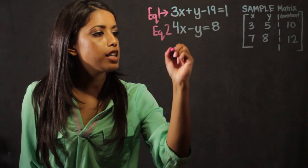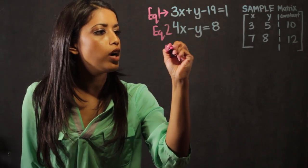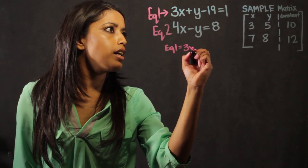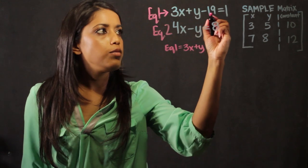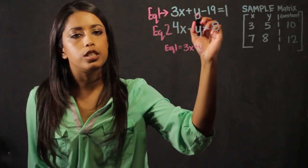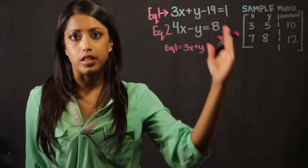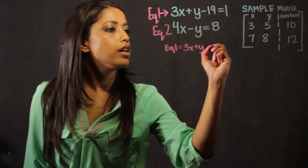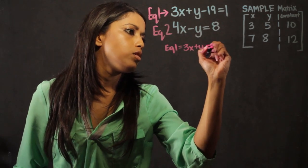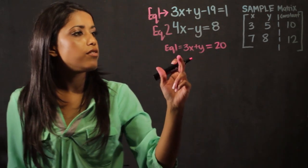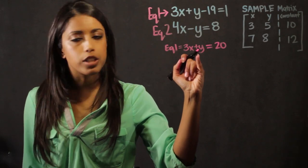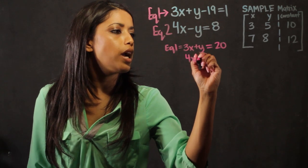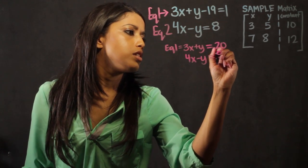So we're going to rewrite that top problem. So equation 1 is going to become 3x plus y. And the way that we move 19 to the other side is to add 19 to both sides of the equal sign. So we add 19 to the other side. 19 plus 1 gives me 20 on the other side. So now I have equation 1 at 3x plus y equals 20. The second equation has not changed, so it's going to be 4x minus y is equal to 8.